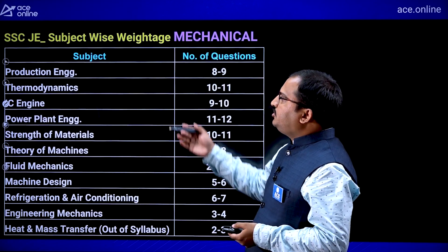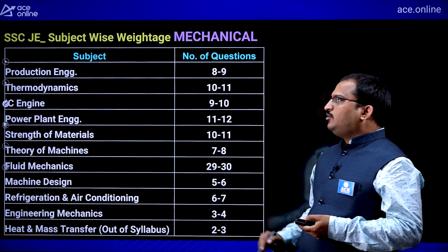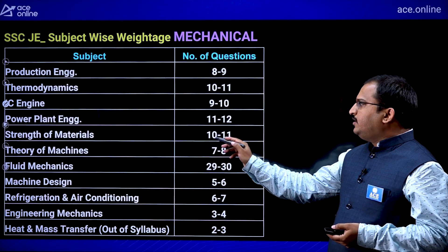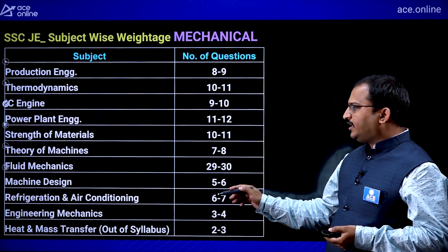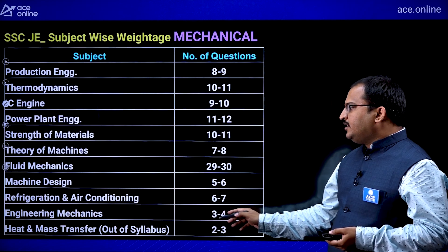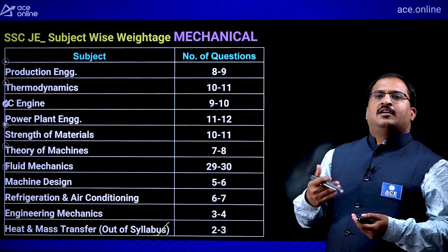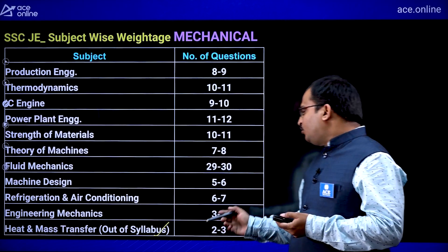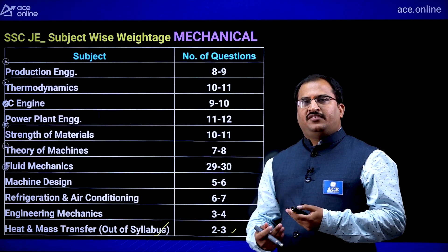For Mechanical Engineering weightage: Production Engineering 8–9, Thermodynamics 10–11, IC Engines 9–10, Power Plant Engineering 11–12, Strength of Materials 10–11, Theory of Machines 7–8, Fluid Mechanics 29–30 marks, Machine Design 5–6, Refrigeration and Air Conditioning 6–7, Engineering Mechanics 3–4, and Heat and Mass Transfer 2–3 marks — though Heat and Mass Transfer is not part of the syllabus, fundamentals are sometimes asked in previous papers.